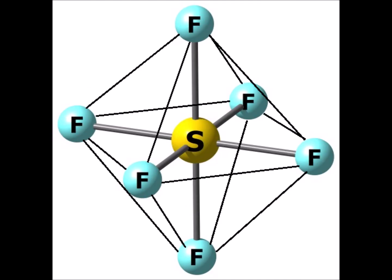Six electron domains, all bonding pairs, gives us the octahedral shape as shown on the screen, where the fluorine-sulfur-fluorine angles are either 90 or 180 degrees. Six electron domains on the central sulfur atom give us d2sp3 hybridization: two d's, one s, and three p's give us a total of six electron domains.